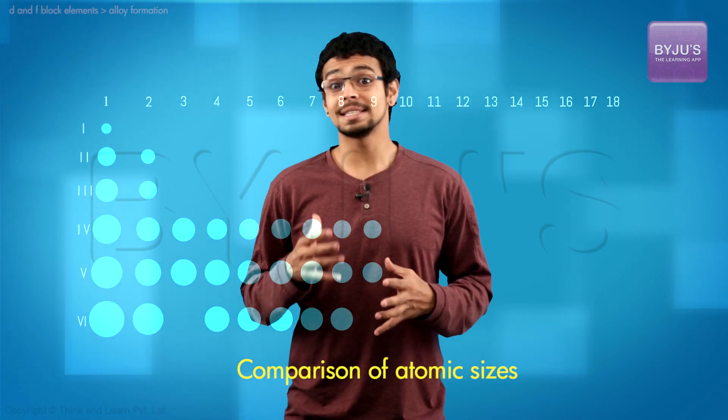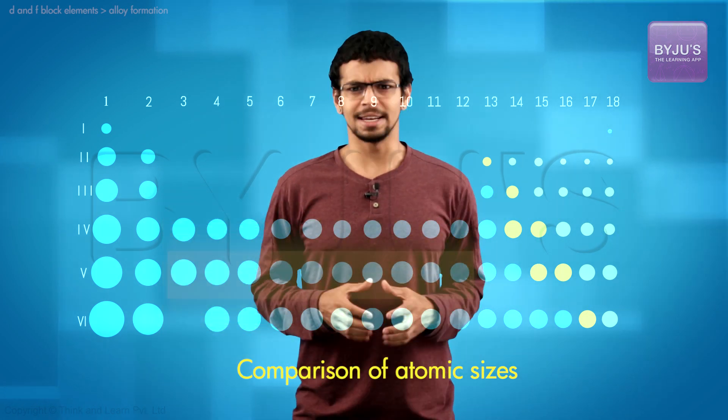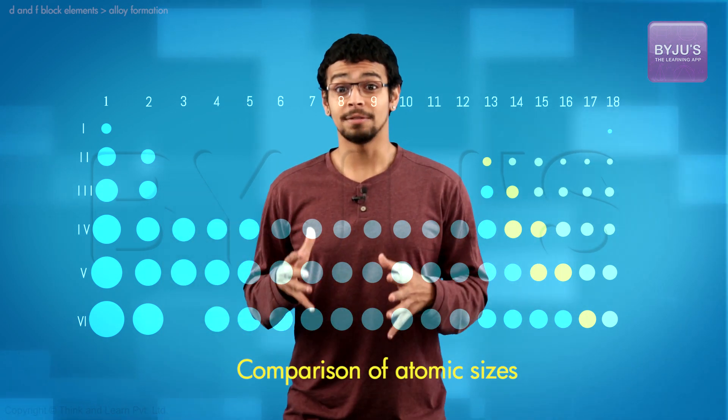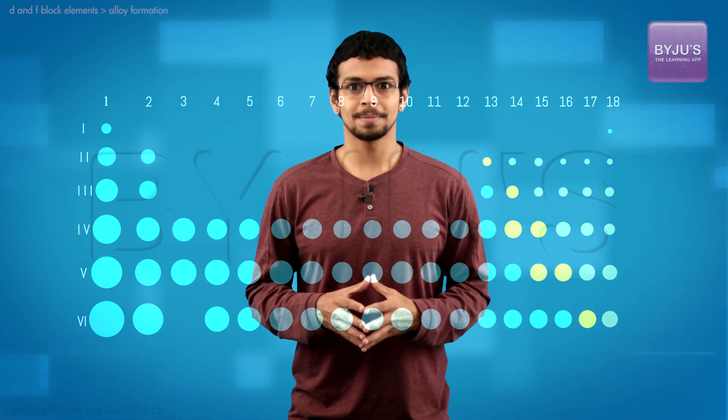On the other hand, the difference in sizes of transition elements is so very little. The atomic radii vary within 15% of one another.